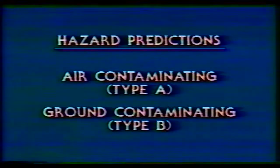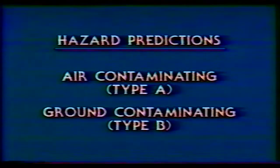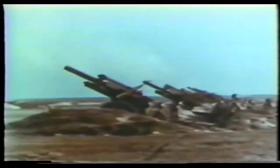For hazard prediction, all agents are classified as either air-contaminating agents, Type A, or ground-contaminating agents, Type B. Air-contaminating agents are normally dispersed as an aerosol or vapor cloud in ground-bursting munitions such as artillery shells and multiple rocket launchers. A non-persistent nerve agent employed upwind of the target is an example of this type of attack. All attacks are assumed to be Type A unless there is unmistakable evidence of ground contamination.